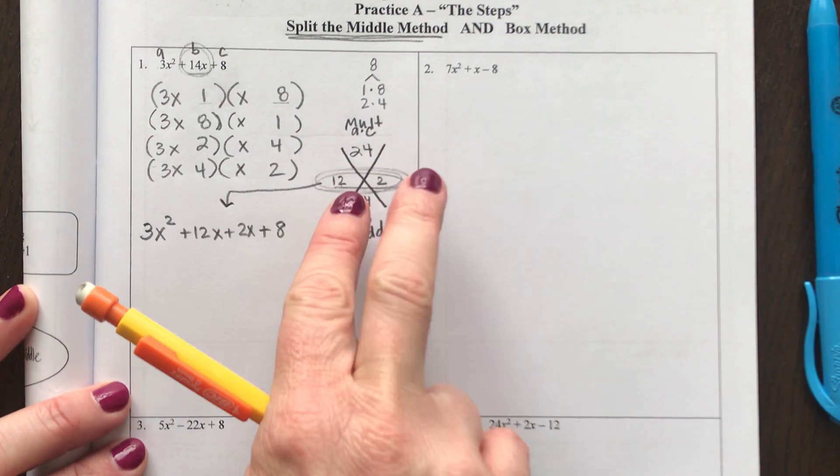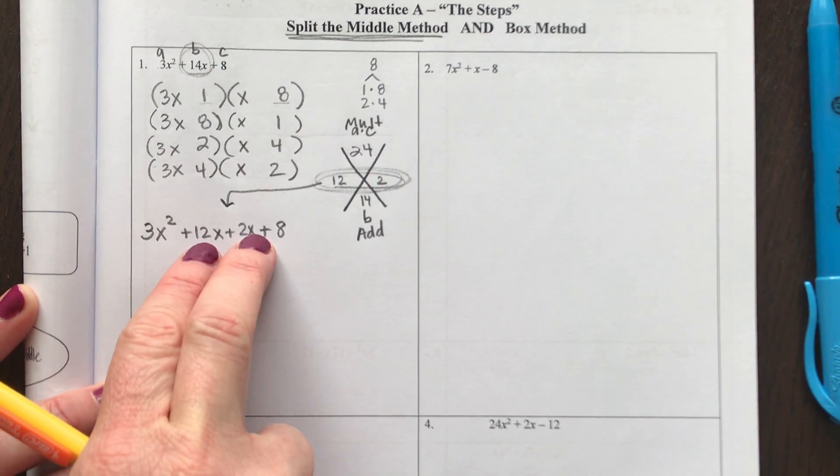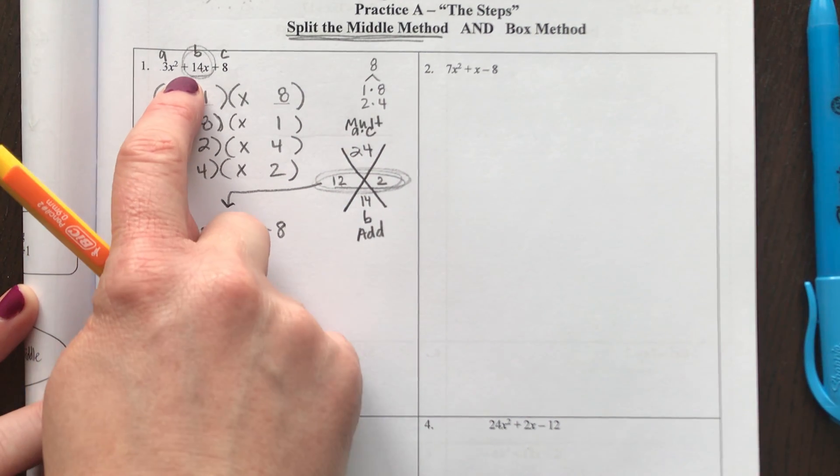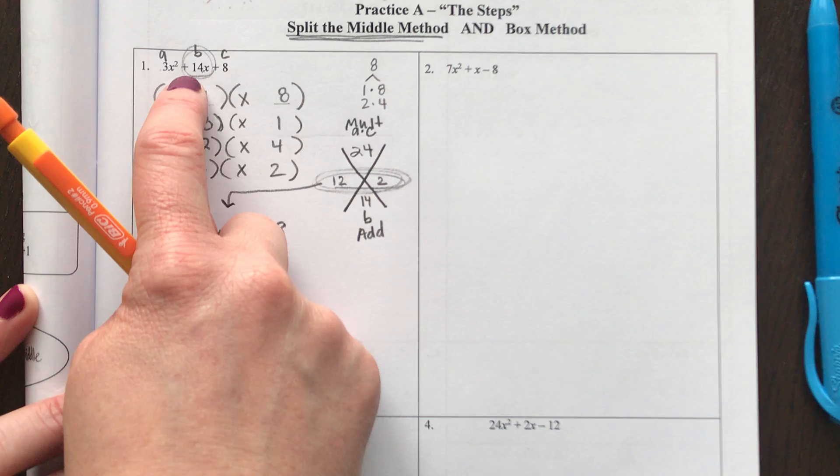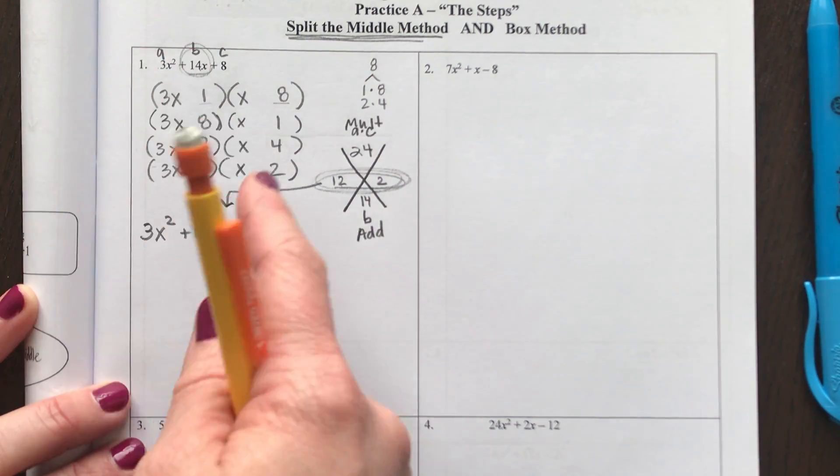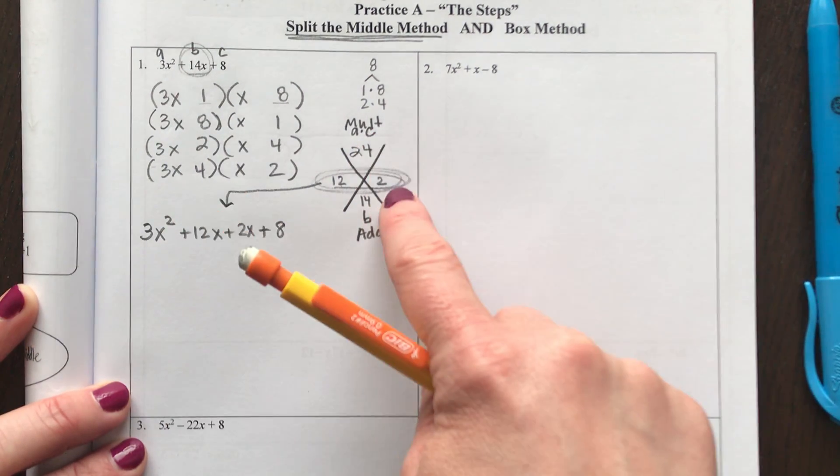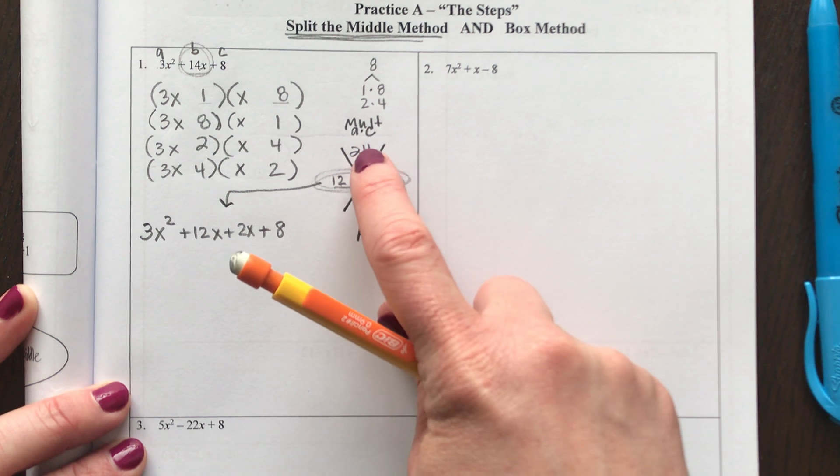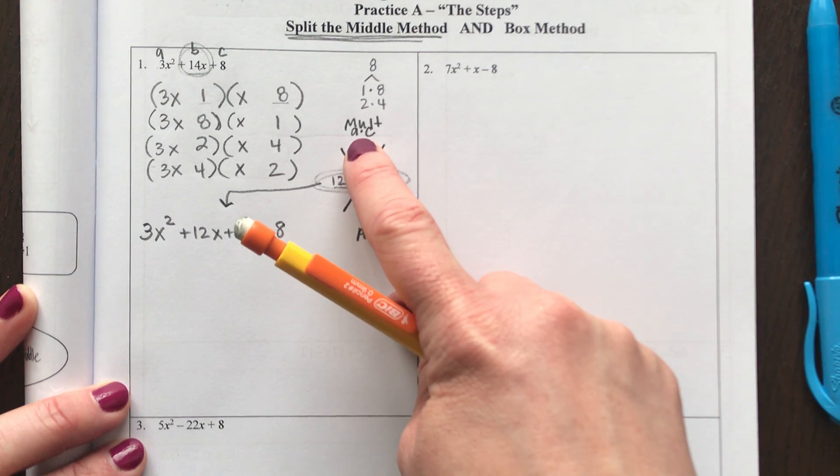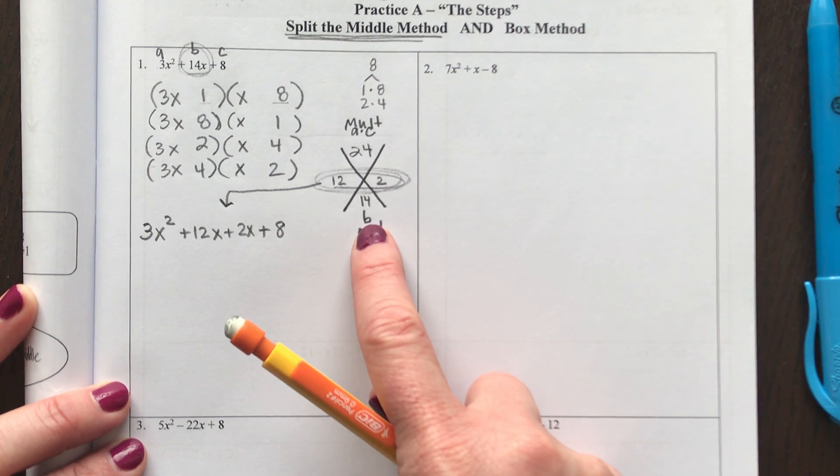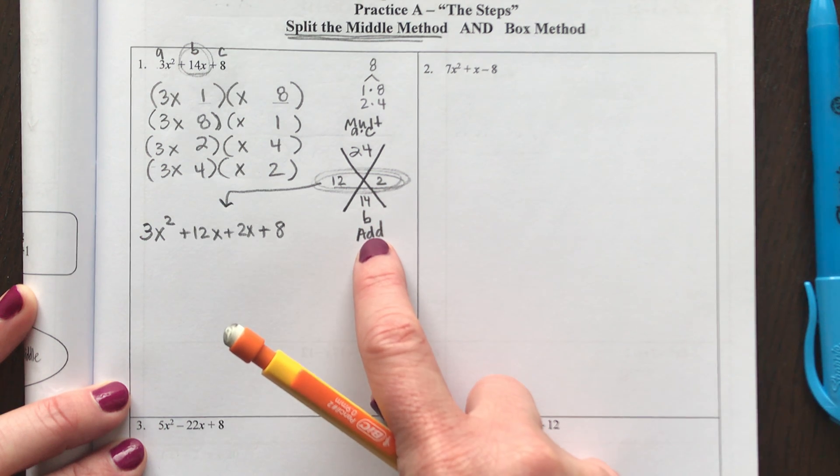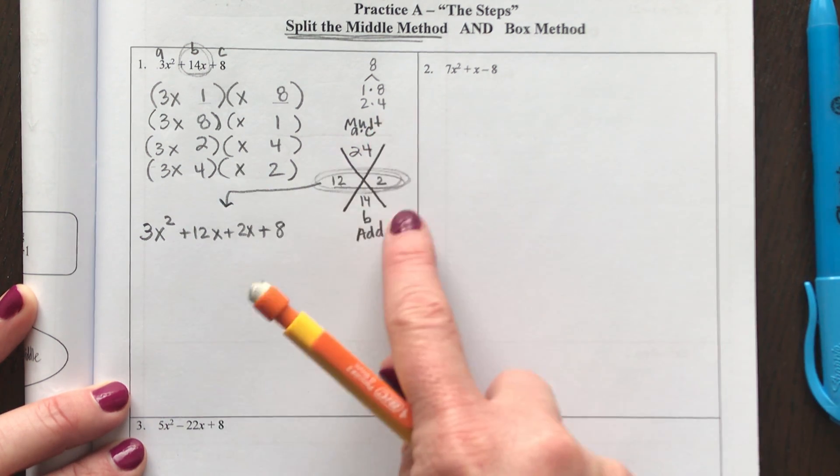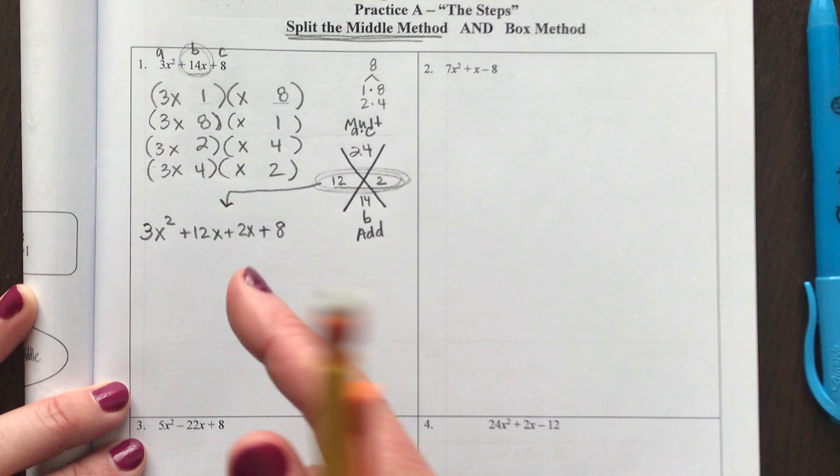And now what I'm going to do is factor by what is called grouping because we have four terms here. The only way to know what two terms you're supposed to split this 14 with, like is it 14 and 0? Is it 13 and 1? You have to get it from the big X, which is two numbers that multiply to make A times C and those same two numbers add to make your middle term B. And so if you don't have this set up, you're never going to find those two middle terms.